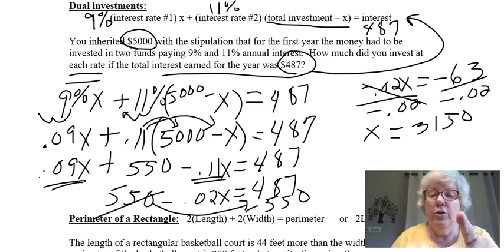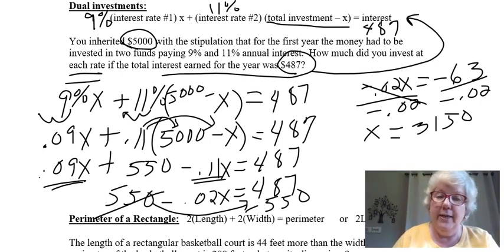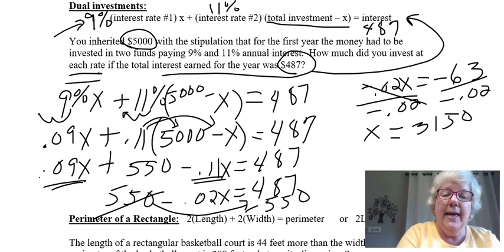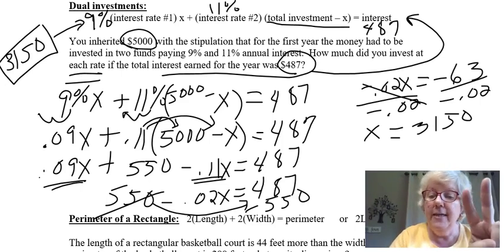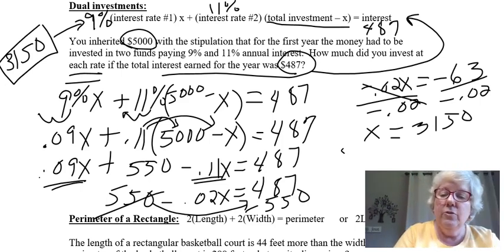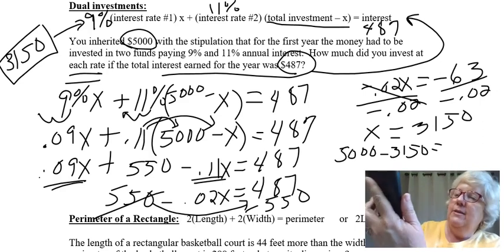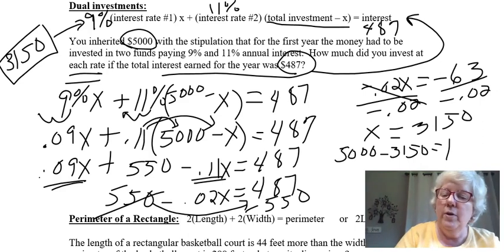Now that first answer goes with your first percentage rate. So the amount of money I had at 9 percent would have been $3150. That's your first answer. To get the second answer, you need to take the original pot of money, $5000, subtract the 3150. You can use your calculator if you prefer, and that will give you $1850. That amount of money goes with the 11 percent. So that's the second answer.